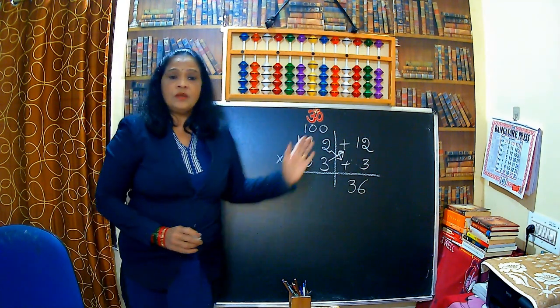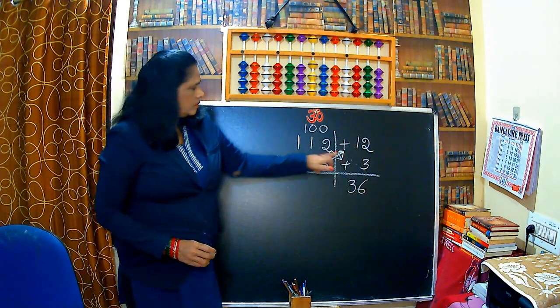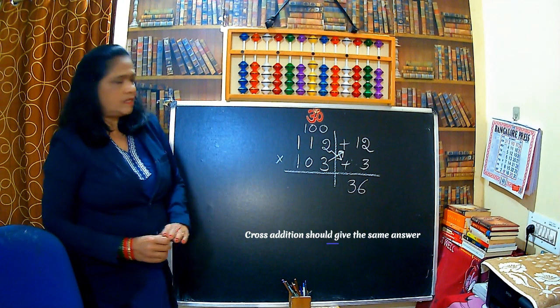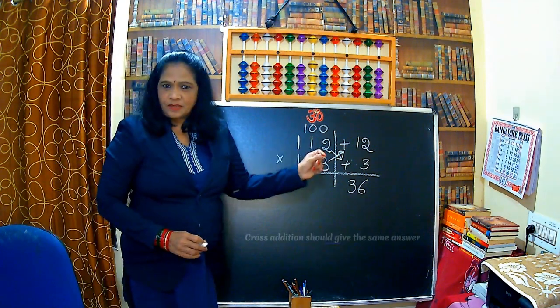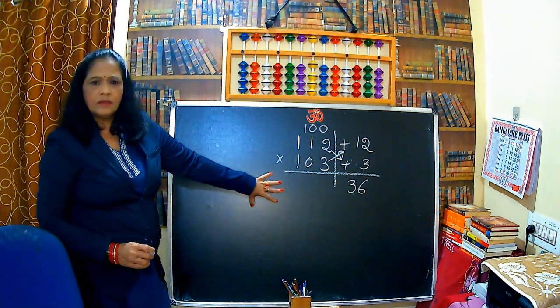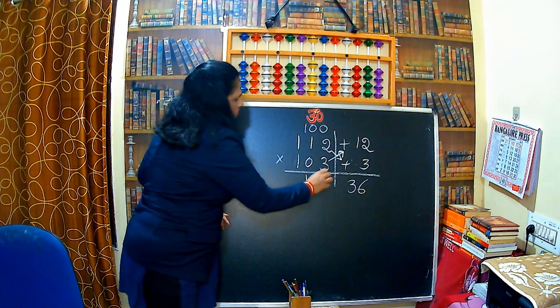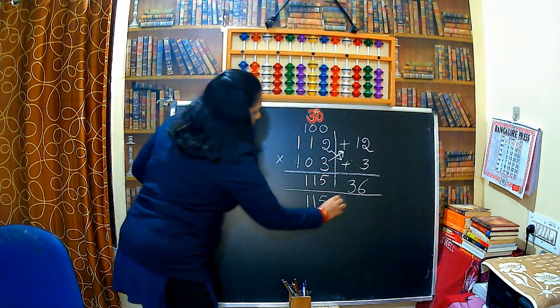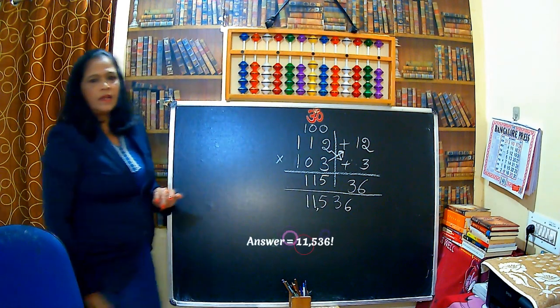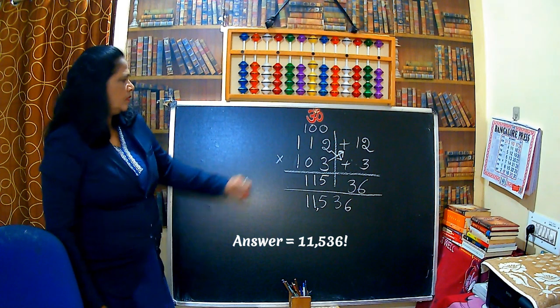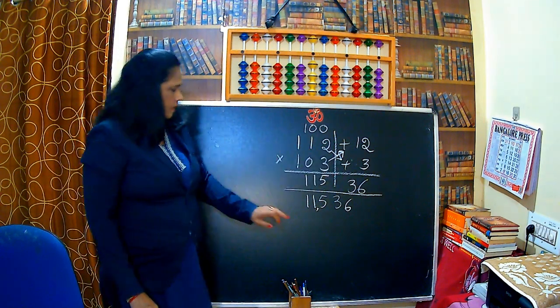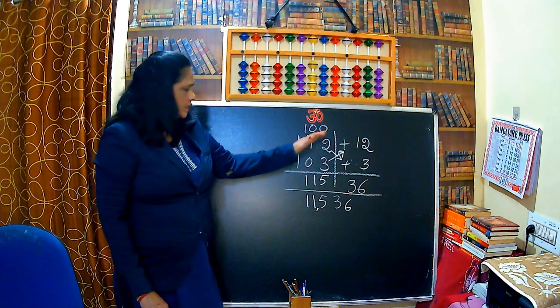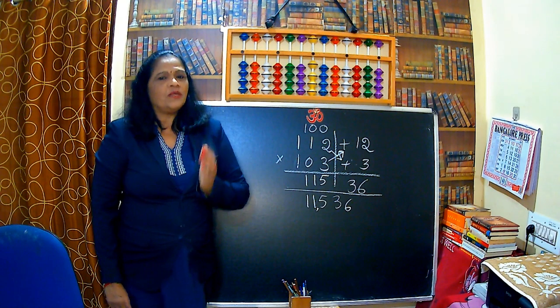That is 115. Both the side, if you multiply 112 plus 3 or 103 plus 12, you have to get the same answer. Then only you can consider what you are doing is correct, isn't it? So then what is the answer? You have to write in the left hand side, that is 115. So what is the final answer? 11,536. That is 11,536. 112 multiplied by 103 is equal to 11,536. So easily in one step, in one step, you can do the answer by using this trick.